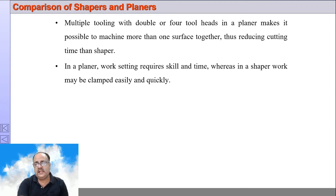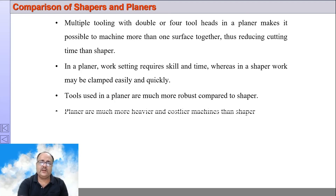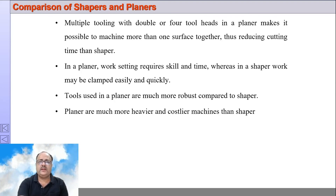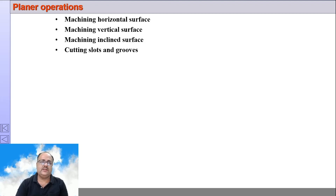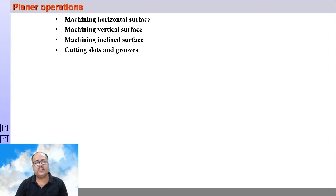In planer, work setting requires skill and time, whereas shaper work setting is very easy. The tools used in a planer are much more robust because the workpieces are larger. The planer machine is much heavier and costlier than the shaper machine. All operations that can be performed on a shaper machine can also be performed on a planer machine — machining horizontal, vertical, and inclined surfaces — but the accuracy is higher and the workpieces are much larger compared to what is done on a shaper machine.